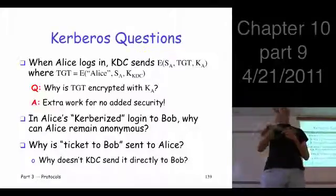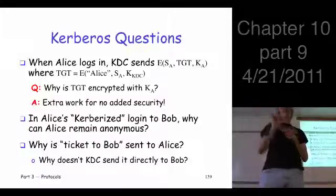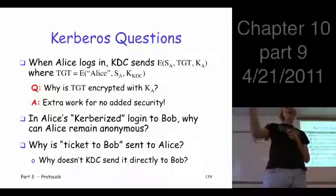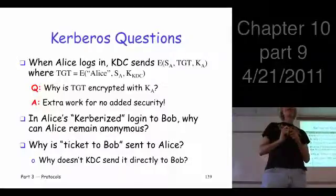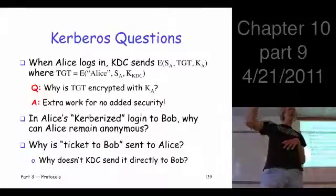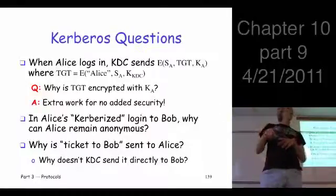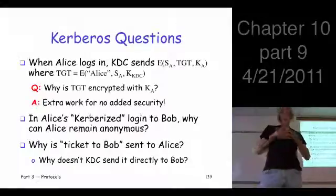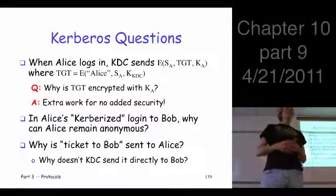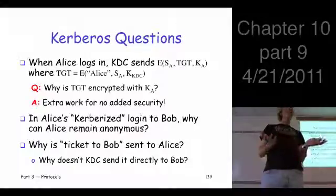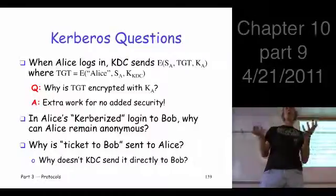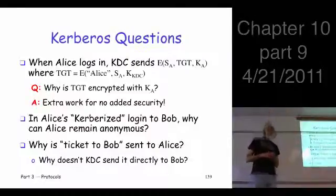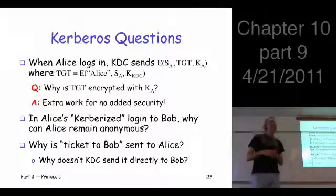But you still have to do the authentication. The authenticator is really what convinces you that it's Alice talking to you at that point. And you have the key, K-A-B, that you got out of the ticket. So here's the alternative. So the KDC sends it directly to Bob. Bob decrypts it, and then what? And then he waits. He waits for what? He waits for Alice to contact him. What does that mean? What does Bob have to do while he's waiting? He has to remember something. He has to keep state.